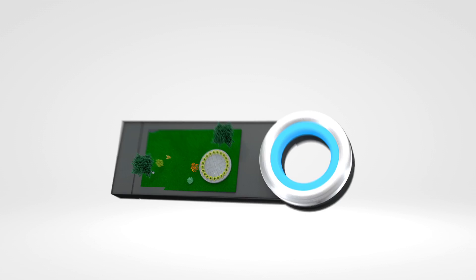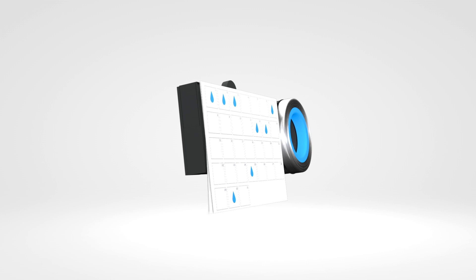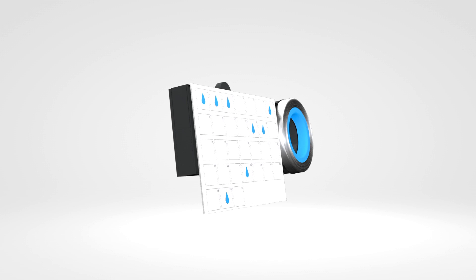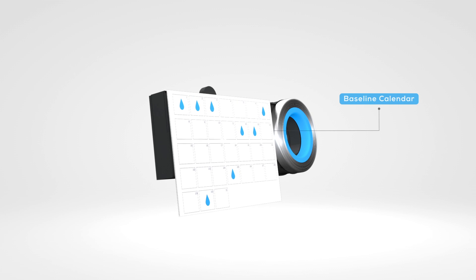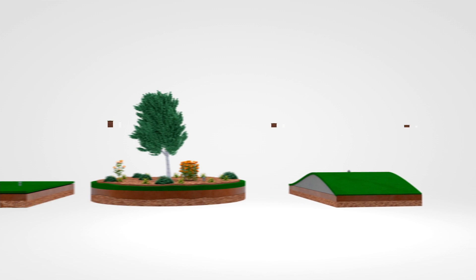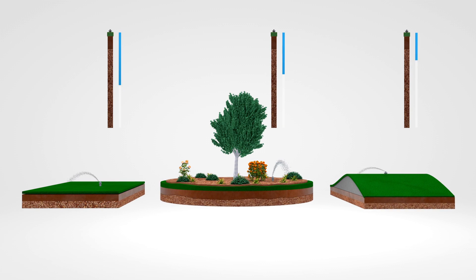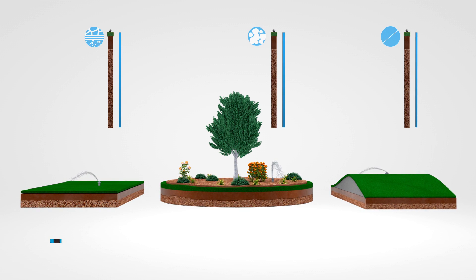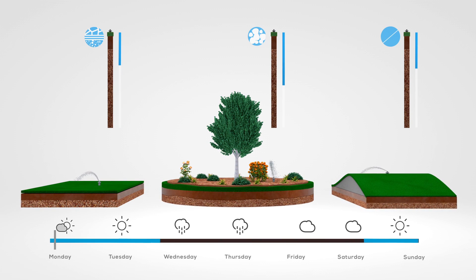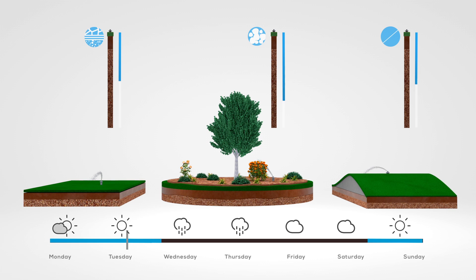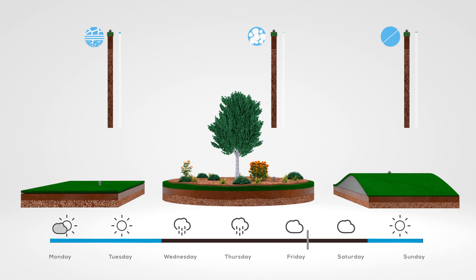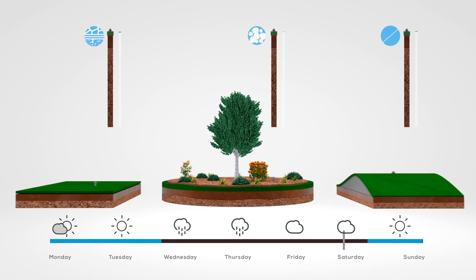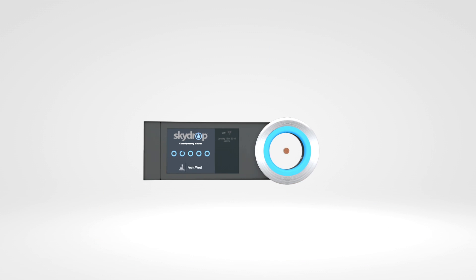Your SkyDrop controller knows the rate at which moisture both saturates and evaporates from the soil and creates a baseline. At first, you may notice that all of your zones will fully water. However, once SkyDrop has created a baseline, it will adjust watering programs based on the weather data it collects. Your SkyDrop system is a learning machine, and we think you're going to like having a pro on your side.